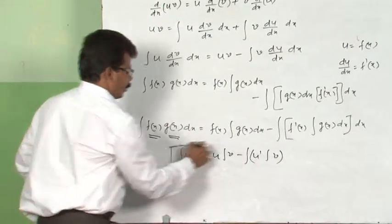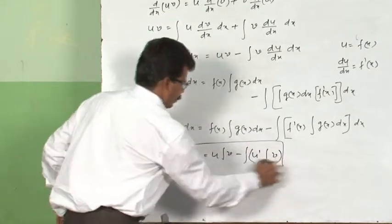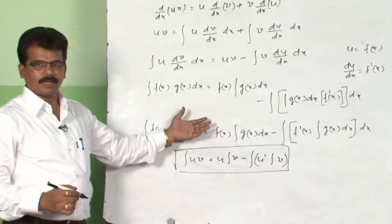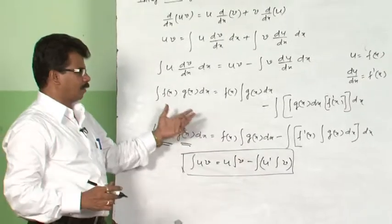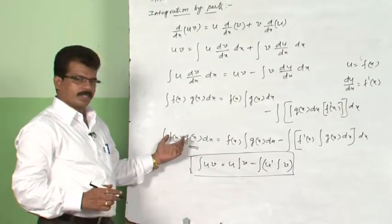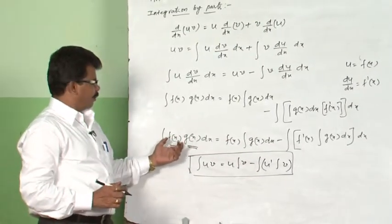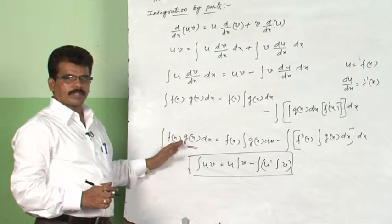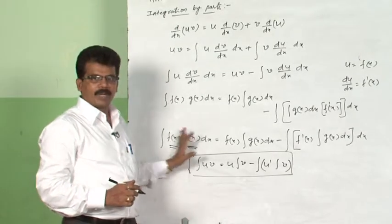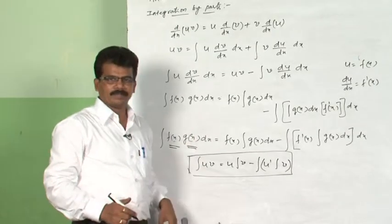This is called integration by parts — either the uv formula or the f(x)·g(x) formula. Whenever the given function is a product of two functions, we use this integration by parts method.